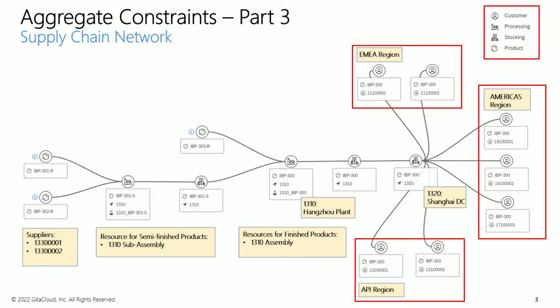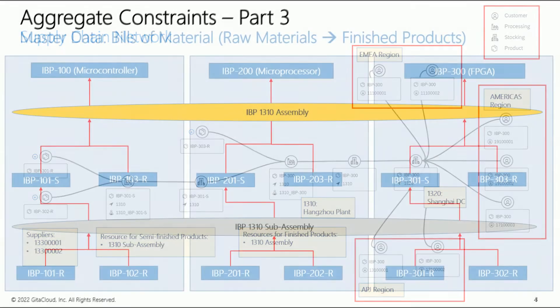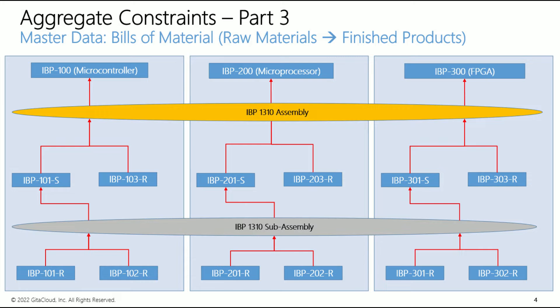See the supply network for an example product IBP300 with an FPGA product family. All three product families are built in plant 1310 in Hangzhou, China. This plant has an assembly line to produce finished goods across all families, and also a sub-assembly line to produce semi-finished goods across all families.